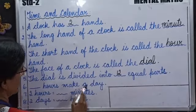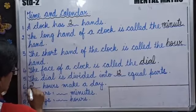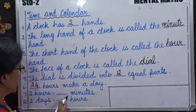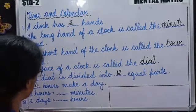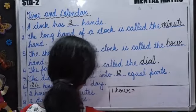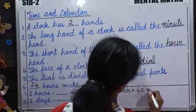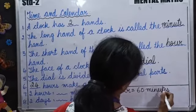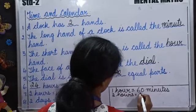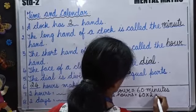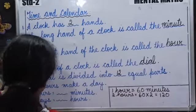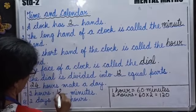How many hours make a day? 24 hours make a day. Next: 2 hours is equal to how many minutes? 1 hour is equal to 60 minutes. So 2 hours is equal to 60 multiplied by 2. You get 120. So 2 hours is equal to 120 minutes.